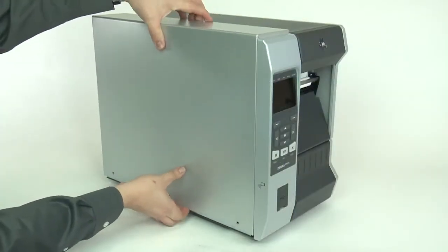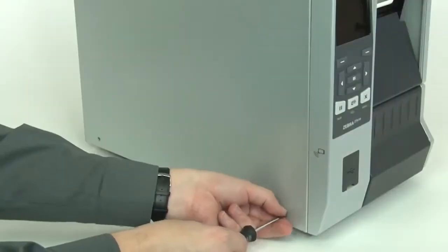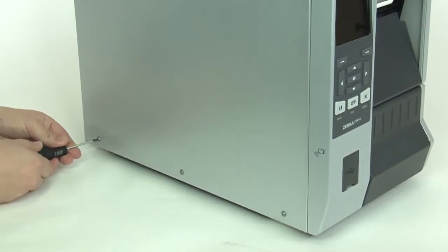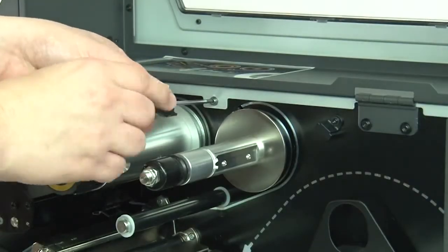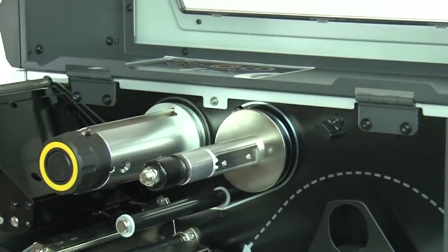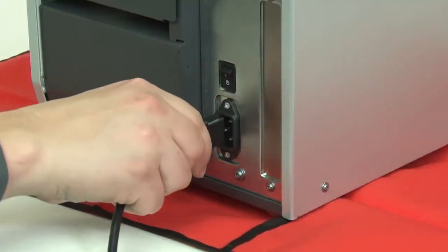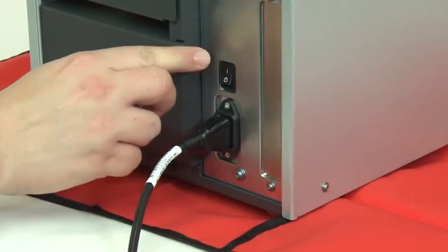Reinstall the electronics cover. From the media side, install the electronics cover mounting screw. Close the media door. Reconnect the power cord and data cables. Turn on the printer.